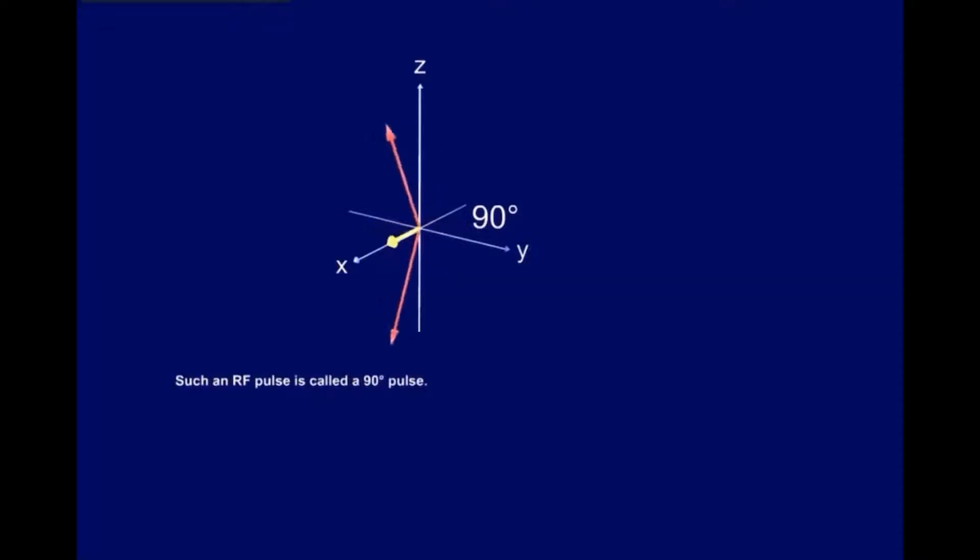Such an RF pulse is called a ninety-degree pulse. Naturally, other RF pulses are also possible, and are named accordingly. For example, one hundred and eighty-degree pulse.